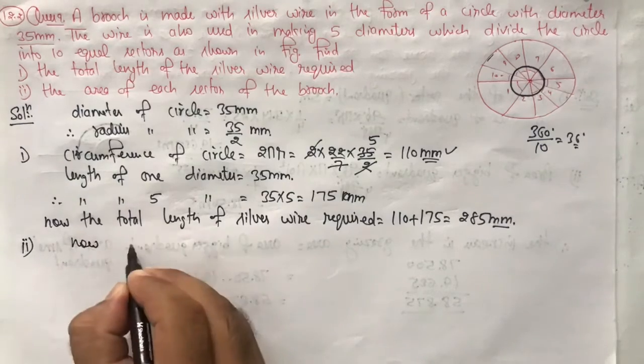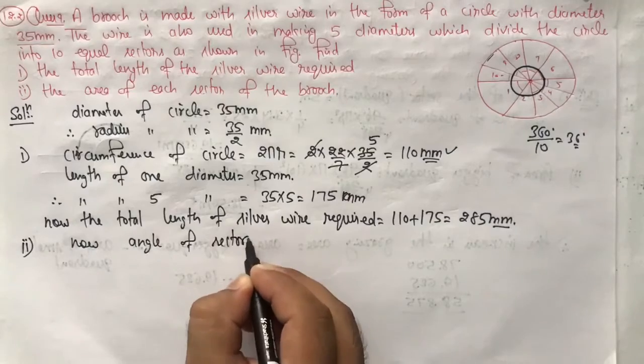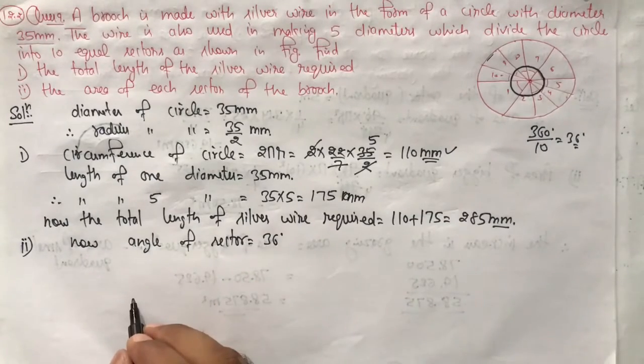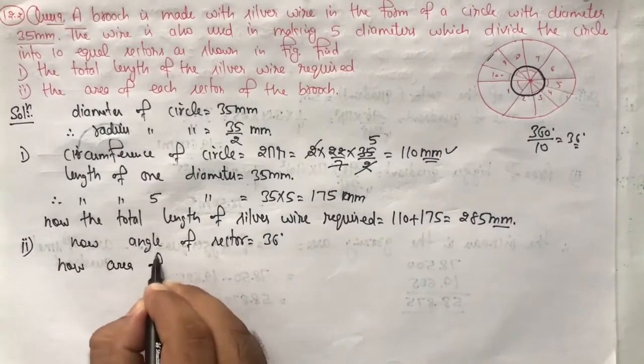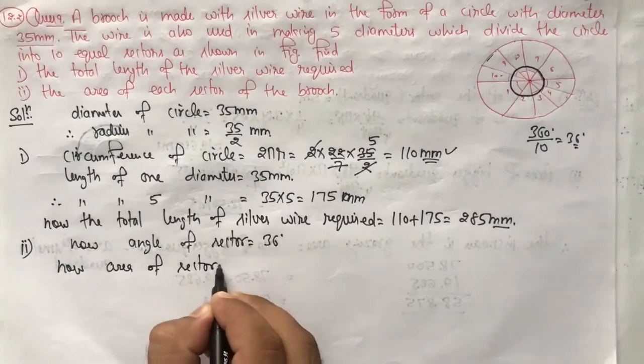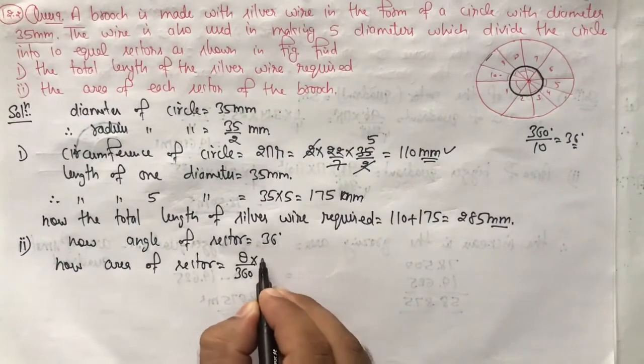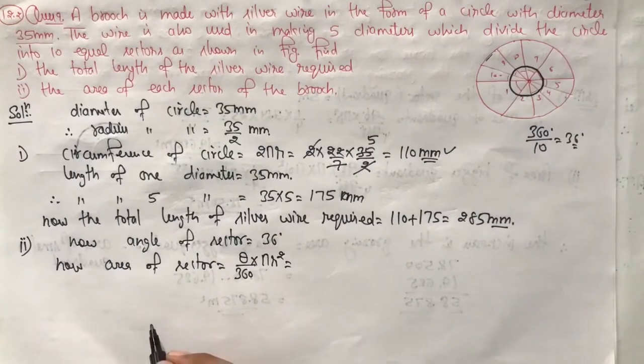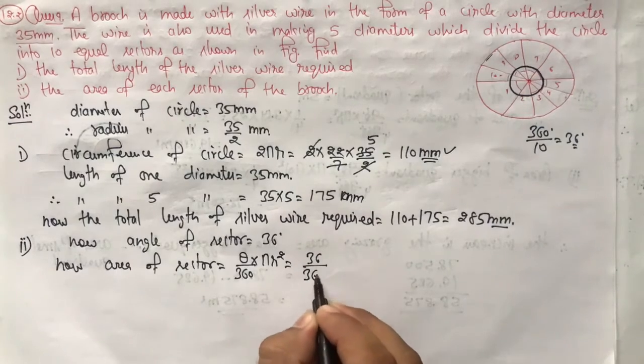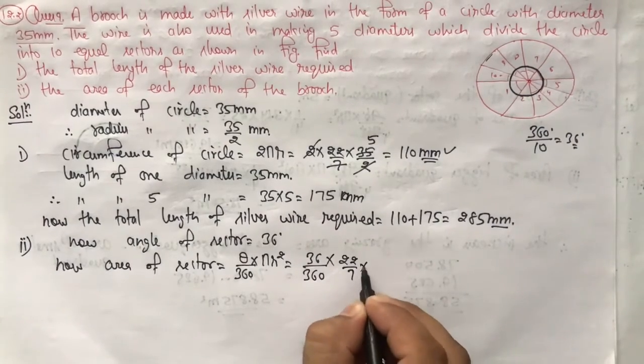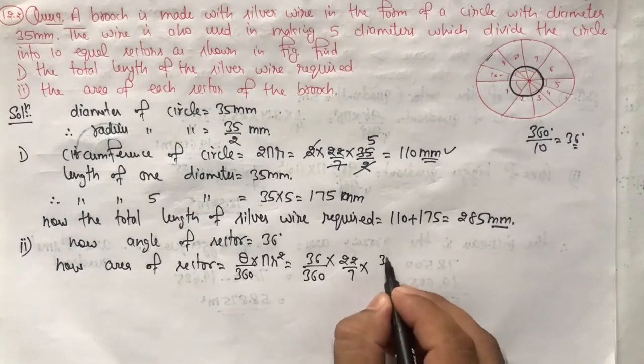Now angle of sector is equal to 36 degrees. Area of sector is equal to the formula θ/360 × πr², which equals 36/360 × 22/7 × r². R value is 35 upon 2.